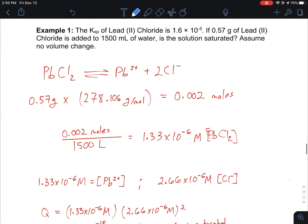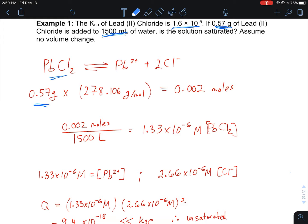Here's an example. The Ksp of Lead(II) Chloride is 1.6 × 10⁻⁵. If 0.57 g of Lead(II) Chloride is added to 1500 mL of water, is the solution saturated? I take my lead and think about my equation: PbCl₂ breaks into Pb²⁺ and 2Cl⁻.